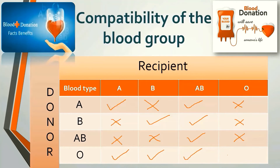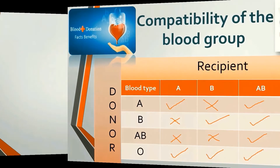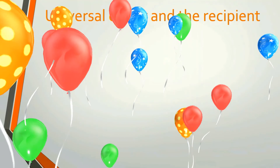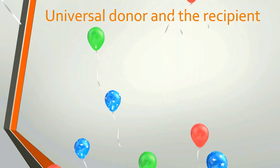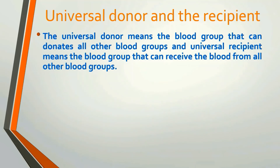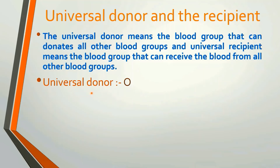O to O blood group transfers can also occur. We should consider the universal donor and universal recipient. The universal donor means the blood group that can donate to all other blood groups, and the universal recipient means the blood group that can receive blood from all other blood groups. O blood group is called the universal donor, while AB blood group is the universal recipient.